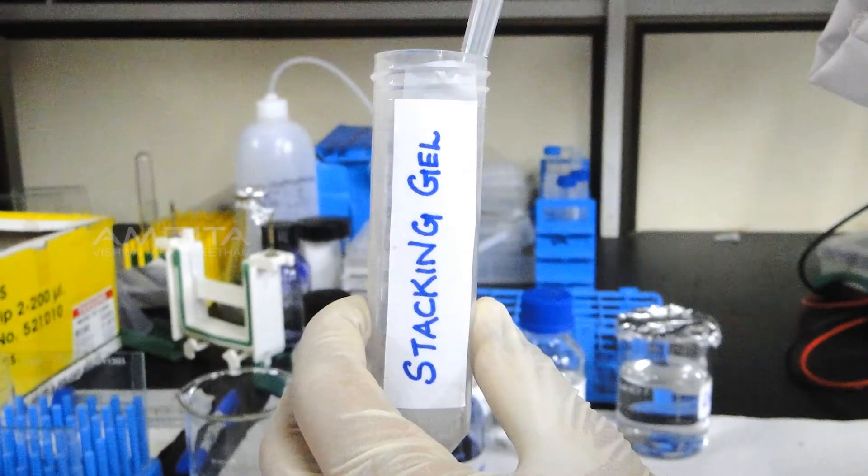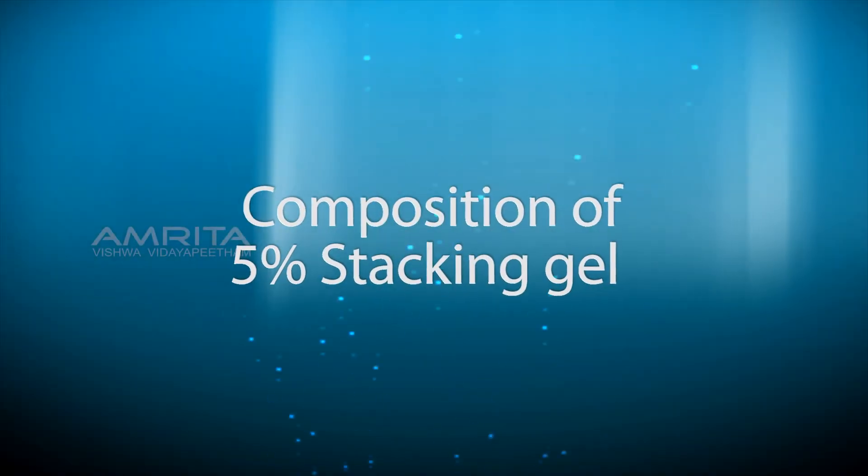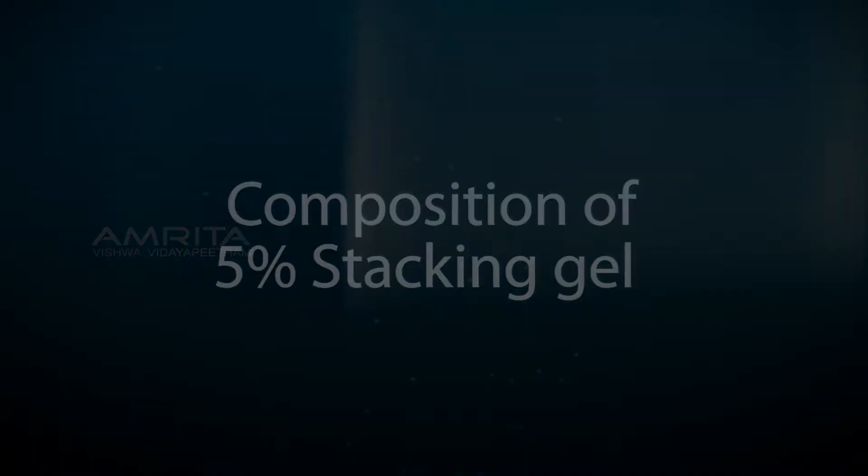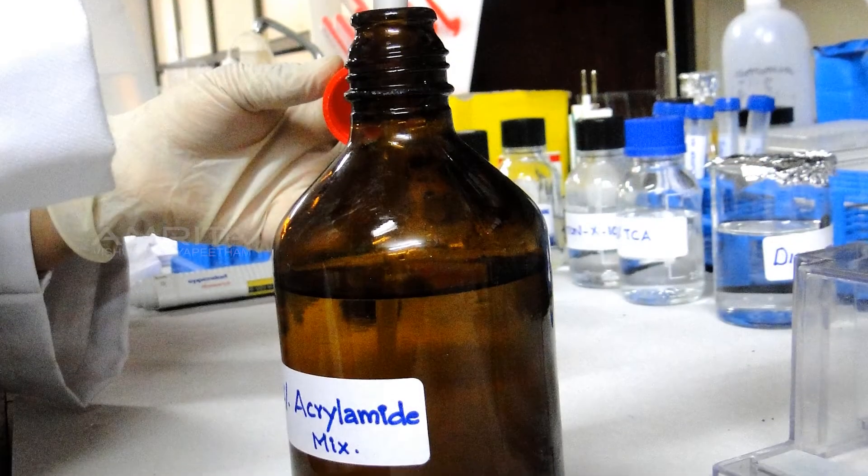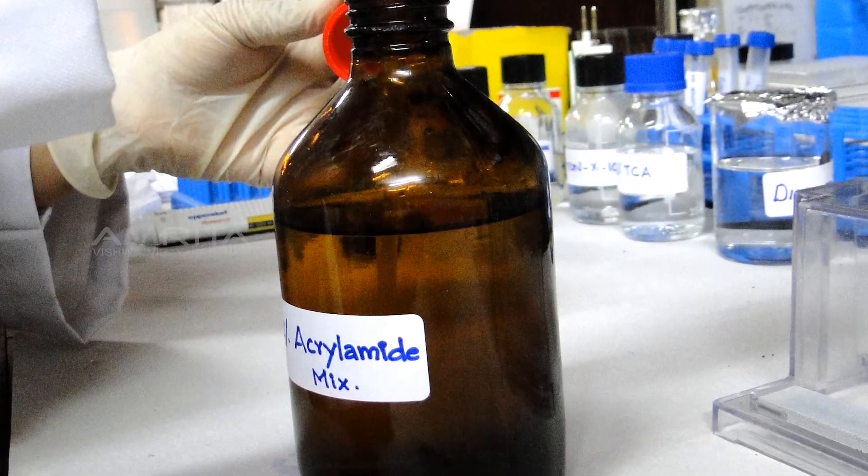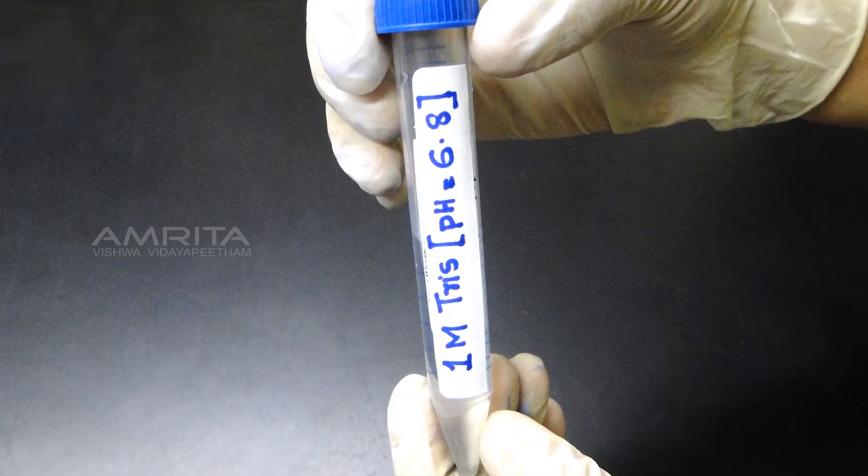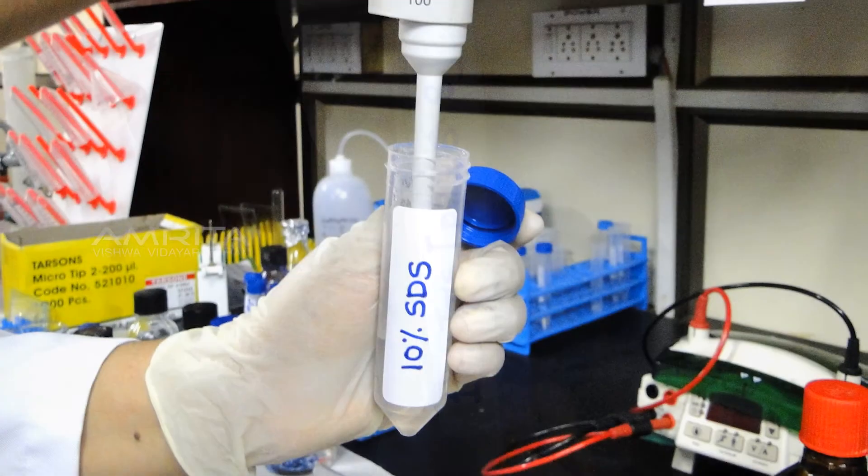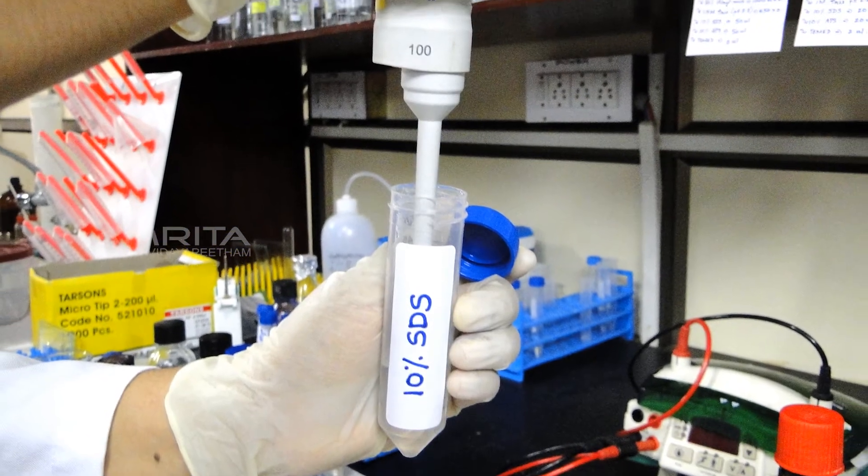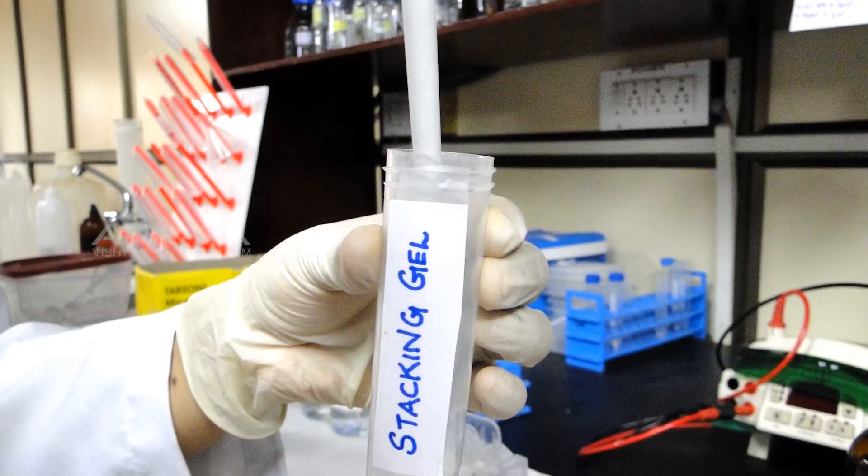During this time, prepare the stacking gel. The composition of 5% stacking gel: 3.4 ml of distilled water, 0.83 ml of 30% acrylamide-bisacrylamide mix, 0.63 ml of 1 molar Tris of pH 6.8, and 0.05 ml of 10% SDS. Add these reagents into a blue capped tube labeled stacking gel.